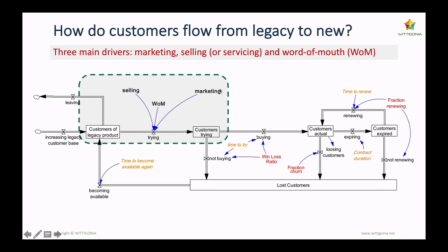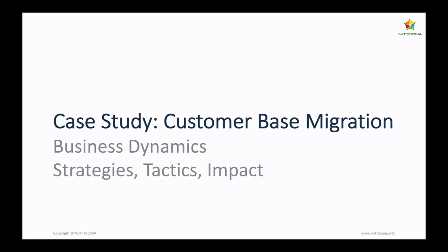The third key area is word of mouth and how the trial process is actually happening. There are three levers here: first, actively selling the product or actively moving customers; second, marketing campaigns communicating to customers and enticing them to adopt and try the new product; and third, word of mouth. These are the three key levers important for our consideration in this case study.